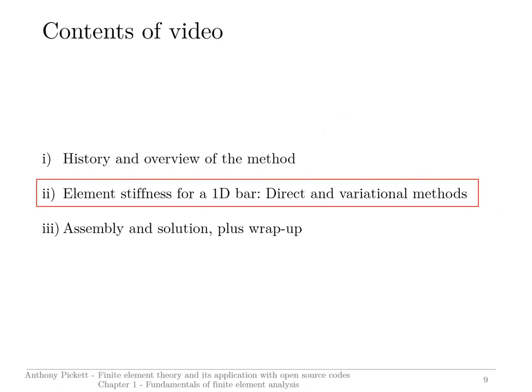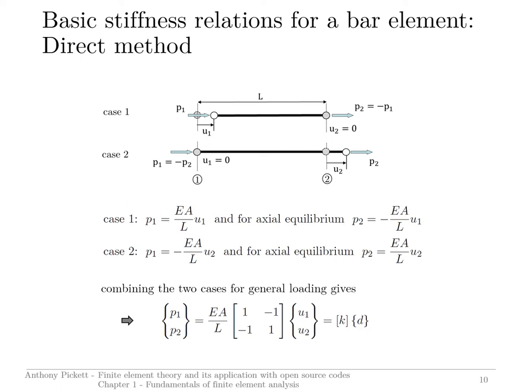This part looks at element stiffness using the 1D bar element — the simplest finite element available. I'll be deriving stiffness using a direct method and then briefly showing variational methods based on Galerkin and Rayleigh-Ritz techniques.